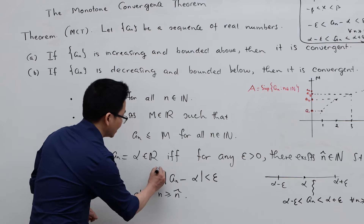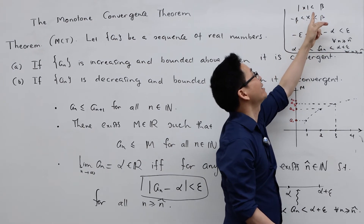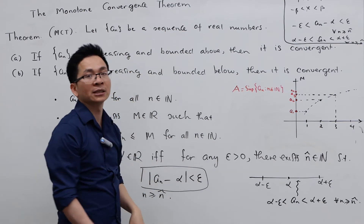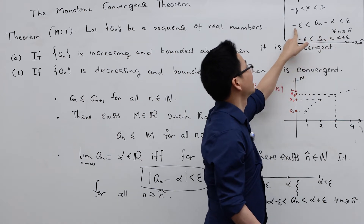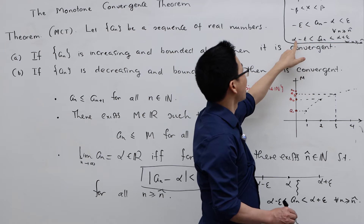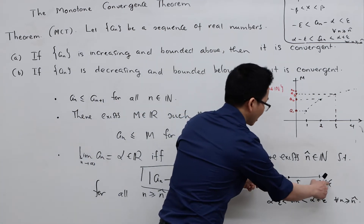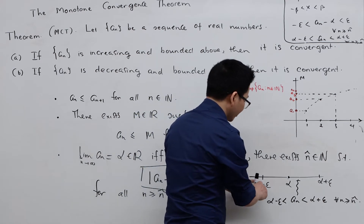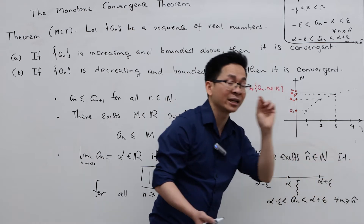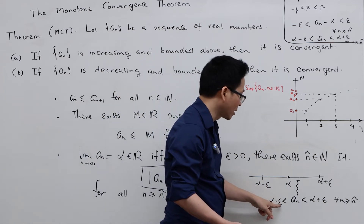So what does this convergence condition mean? Recall that for a real number x, |x| < β if and only if -β < x < β. So the condition |aₙ - α| < ε can be written as -ε < aₙ - α < ε. Adding α to both sides gives α - ε < aₙ < α + ε. So no matter what ε > 0 you take, there exists some index n̂ such that starting from that index, all aₙ lie in the open interval (α - ε, α + ε).